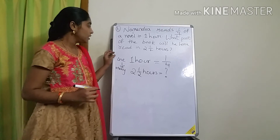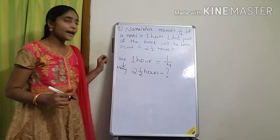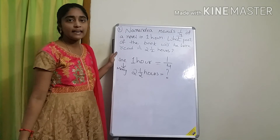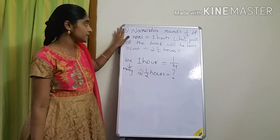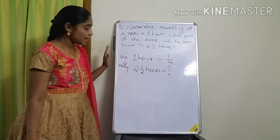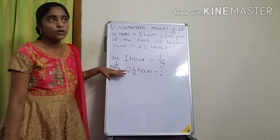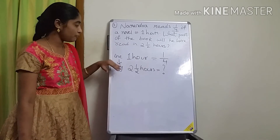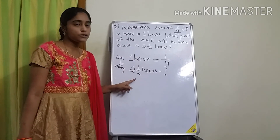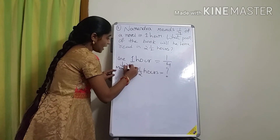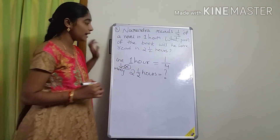Let me clarify the keywords. For addition, they will say 'total' or 'sum.' For subtraction, the keyword is 'remaining' or 'left.' For multiplication, they give a value for 1 and ask for many. For division, it is the reverse: given for many, asking for 1. For example, if 10 boxes have 20 pencils total, how many in 1 box? That is division.